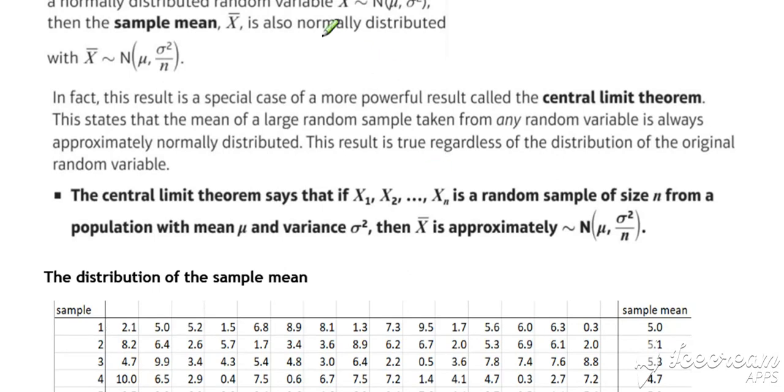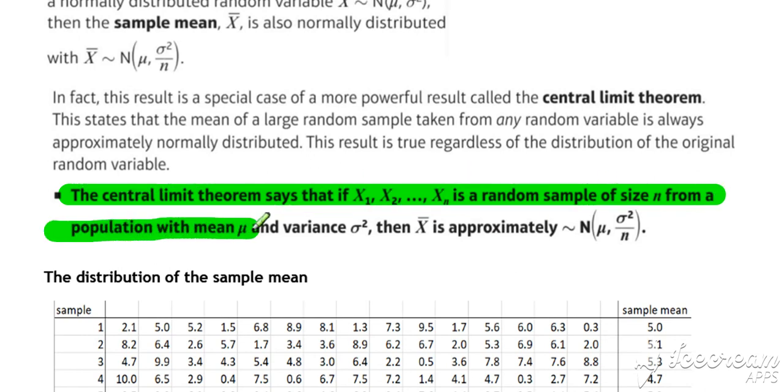So to summarize and clarify, the central limit theorem says that if we take a random sample of size N from a population with a mean of mu and a variance of sigma squared, then X bar will approximate to a normal distribution, providing we've got a large enough sample size. So we say N needs to be greater than 30. A rough ballpark figure, N needs to be greater than 30 to make this approximation good.